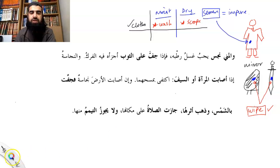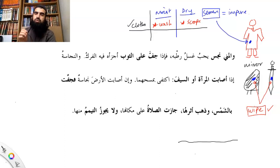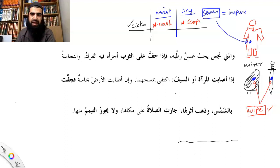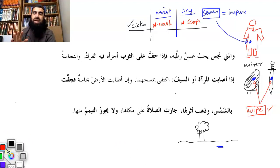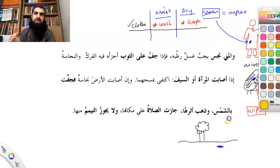What about earth — the ground? Not carpet; carpet comes under the ruling of cloth. We're talking about outside, on slabs or soil — where someone has urinated or defecated. The ruling is: if it dries up through natural means, like the sun shining on it, wa dhahaba atharuha — and its traces are gone — the traces of urine being smell, colour, etc. — then jazat al-salatu alayha — you're allowed to pray salat on it.